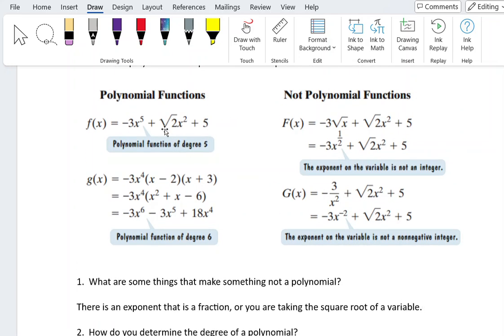Notice that taking the square root of a number is okay. So here I have square root of 2 times x squared. That is still a polynomial because I'm not taking the square root of the variable x. Over here, I am taking the square root of x and so that makes it not a polynomial.